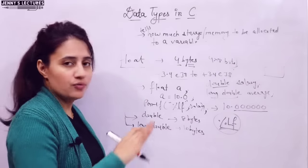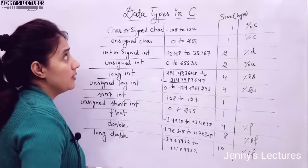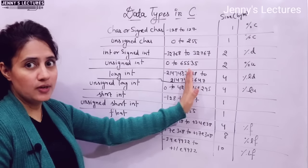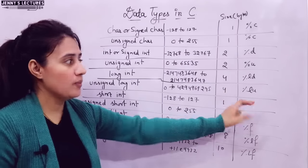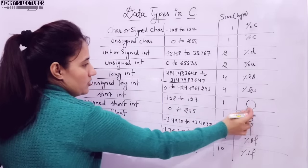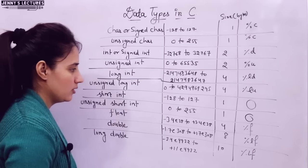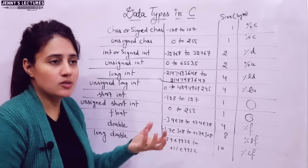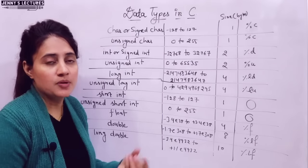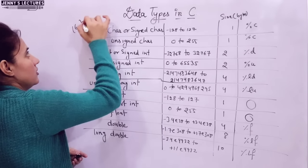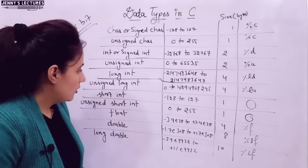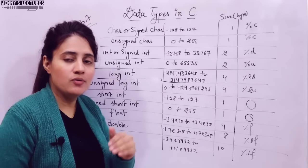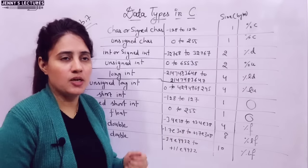Now let me draw a table of all these data types for your reference — it's not like you need to remember everything. The table shows: data type, range, size in bytes, and format specifier. Note that I am writing this in the context of a 16-bit machine. The size and range depend on the machine — 16-bit, 32-bit, or 64-bit. So now that's it for primary data types in C. One by one we will discuss derived data types as well as user defined data types like enum in the next videos.